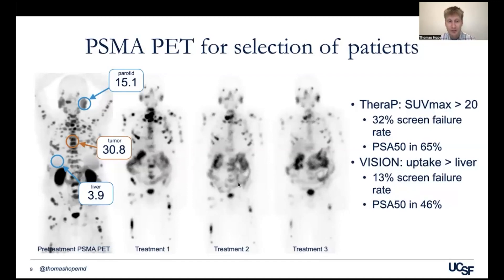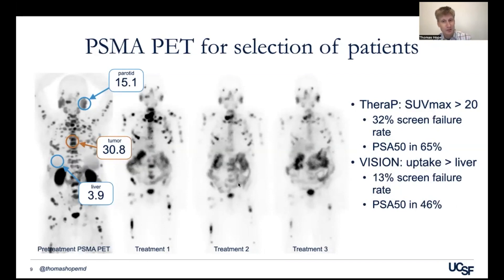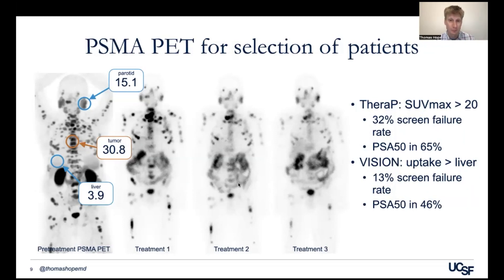To meet criteria for the VISION trial, you'd probably have to have an SUV max in your tumor above four. For the TheraP trial, it required patients to have an SUV max over 20 — a much higher uptake than the VISION trial. That's like priming the pump — selecting out patients who are more likely to respond. More uptake on a PSMA PET means more radiation dose goes to the tumor, more injury to the tumor cells from the radiation, and more response.